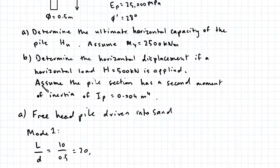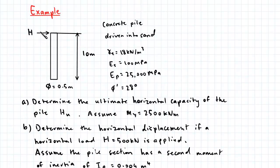And E on D, that's the height of the horizontal force above the ground surface divided by the length of the pile.